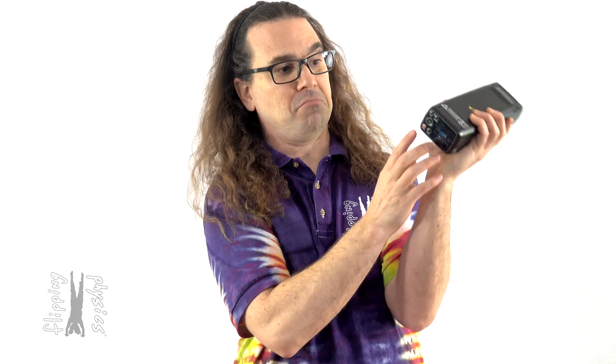For example, this camera flash uses chemical energy stored in this rechargeable battery to move electric charges to a capacitor and store energy in the electric field of the capacitor as electric potential energy. So right now, energy is stored in the capacitor and I can press this button to convert that electric potential energy to light and heat energy.